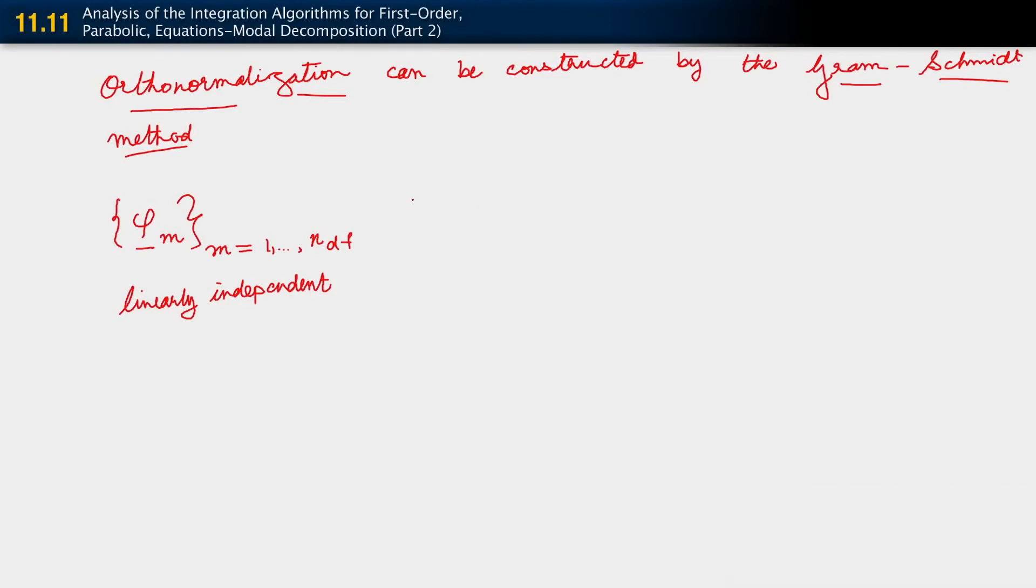So we are assured of linearly independent eigenvectors phi. And the Gram-Schmidt process, GS is short for Gram-Schmidt, essentially takes us to a set psi sub m, which are now m orthonormal, as we have defined.